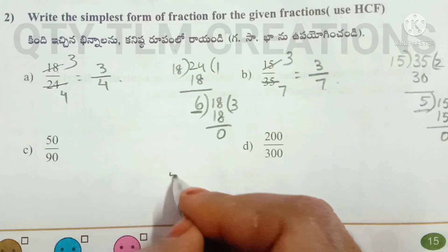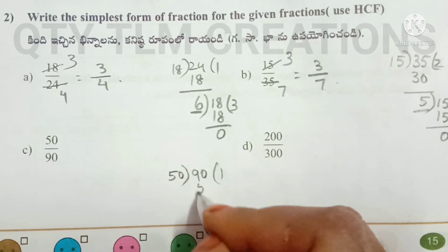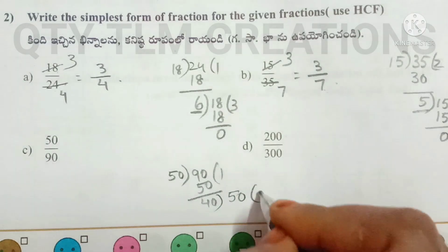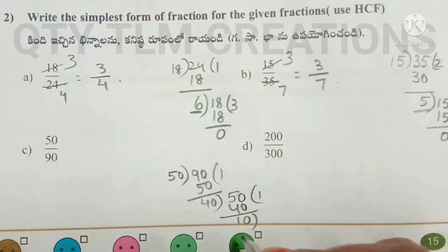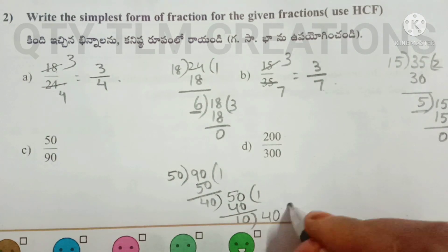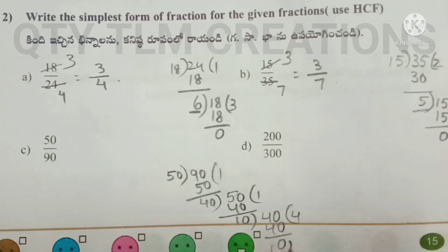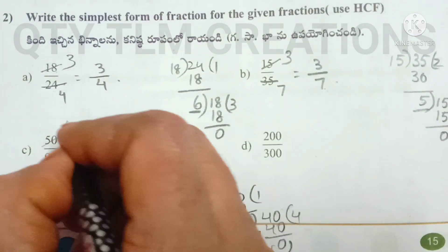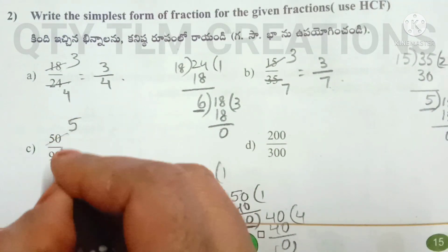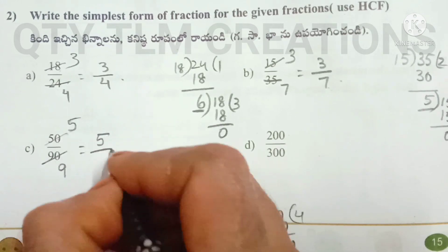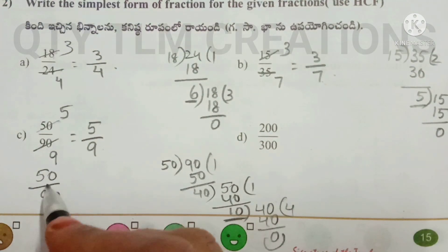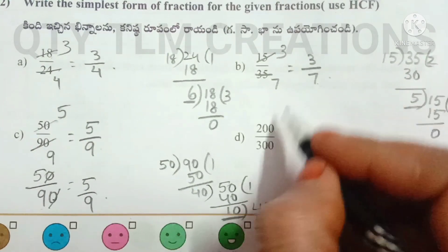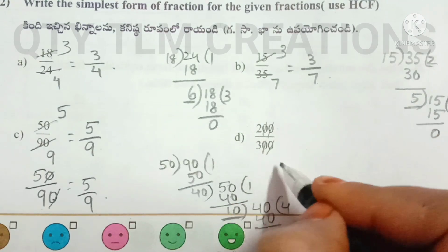For 50/90: HCF — 90 − 50 = 40; 50 − 40 = 10; 40 ÷ 10 = 4, remainder 0 — HCF is 10. Dividing both by 10: 10×5=50 and 10×9=90, giving 5/9. We can also simply cancel the zeros to get 5/9. For 200/300: cancel zeros twice to get 2/3. Okay, we will meet in another video with another topic. Until then, bye, thank you.